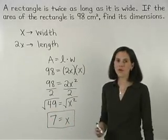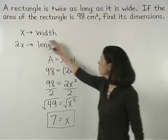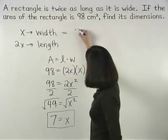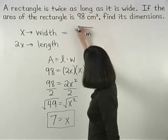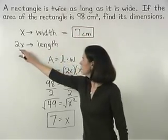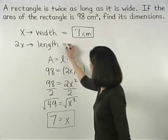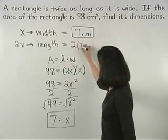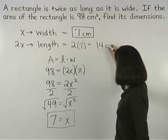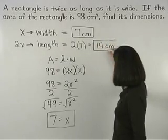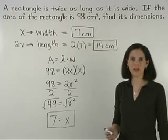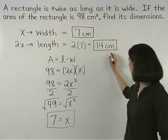So the width of the rectangle, which is x, is 7 centimeters. And the length of the rectangle, 2x, is 2 times 7, or 14 centimeters. Don't forget to include the units — in this case centimeters — in your final answer.